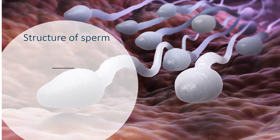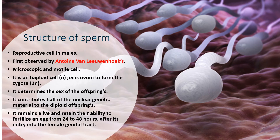Human sperms are reproductive cells. They participate in the production of new offspring. Sperms were observed by Antony van Leeuwenhoek for the first time under the microscope. Sperms are microscopic structures — we can observe the structure of sperms under the microscope only. The sperms are motile cells; they are movable. Sperm is a haploid cell.